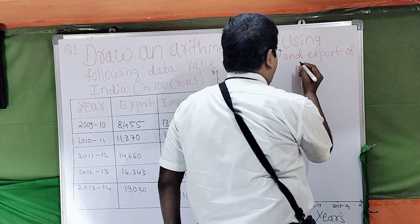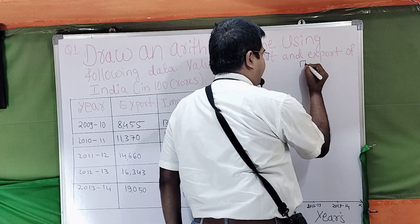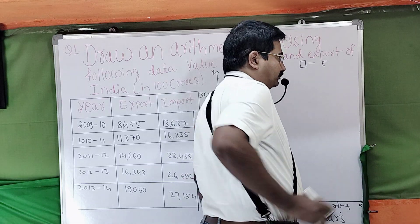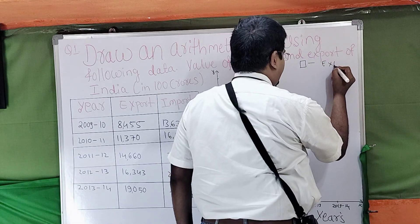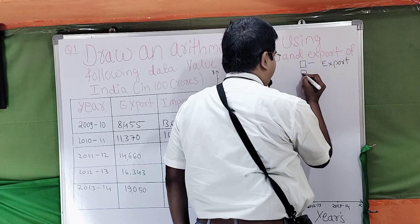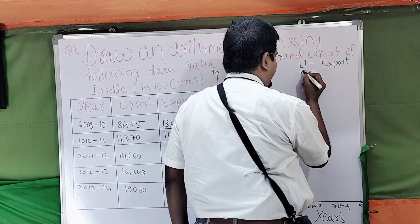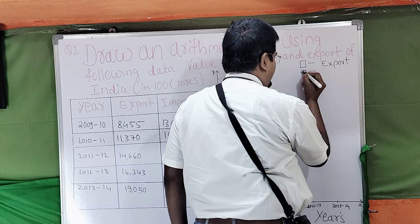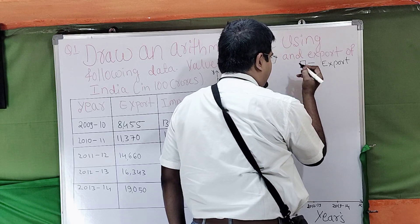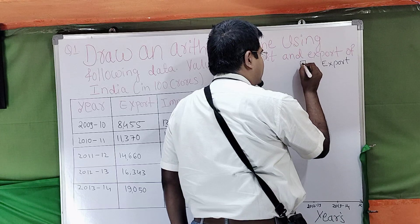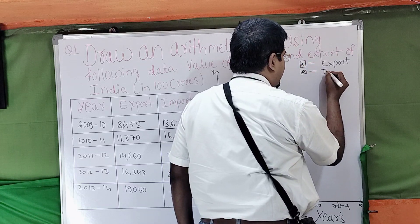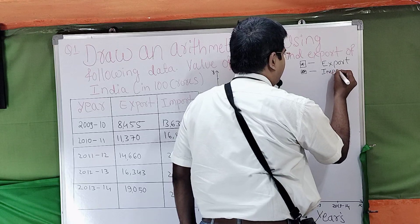First, we have taken the indication. Export is indicated by a star symbol. Import will be given by a delta type symbol. So star for export and delta for import — this is the most important, dear students.